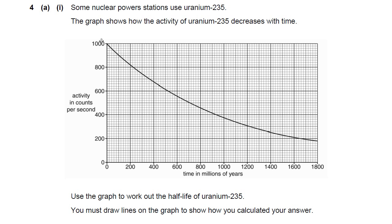So as you see, activity is on the y-axis, time is on the x-axis. And as with all radioactive elements, the activity doesn't decrease linearly. It decreases in this curve, and we know that curve is a half-life curve. You have to be able to use the graph to work out the half-life of Uranium-235. You must draw lines on the graph to show how you've calculated your answer.